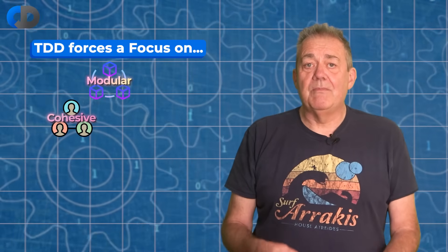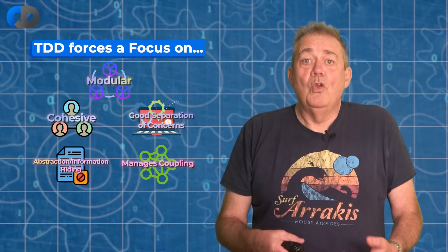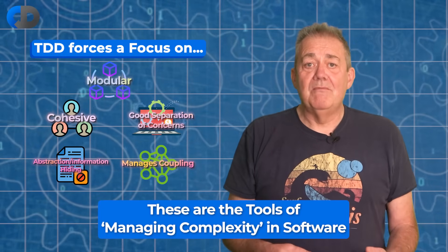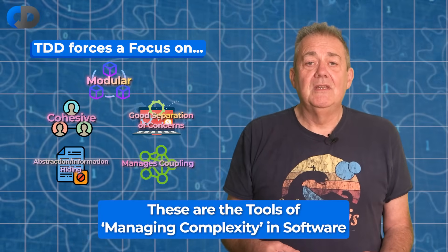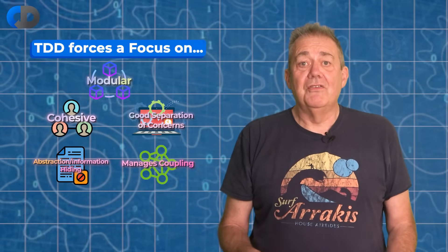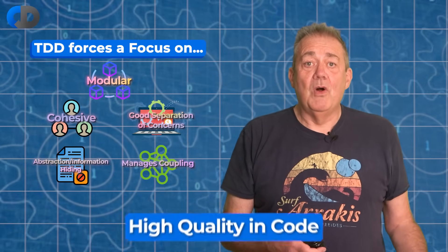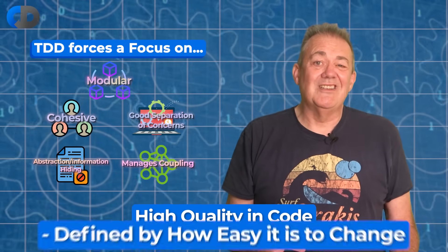We can certainly argue about whether or not the designs that result from TDD are better or not. But TDD certainly has a significant impact on the shape of our code, encouraging a significantly stronger focus on modularity, cohesion, separation of concerns, abstraction, and sensibly managed coupling, all of which help us to better manage the complexity of the systems that we build, maintaining our ability to change them as they, and our understanding of them, evolves over time.